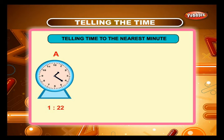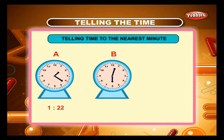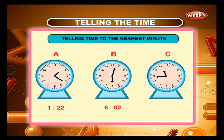Similarly, the time in clock B is 2 minutes past 6, or 6 hours and 2 minutes. And the time in clock C is 16 minutes to 12, or 11 hours and 44 minutes.